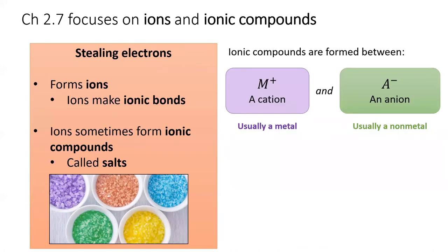Ionic compounds are always formed between a cation and an anion. Cations are usually metal, since metals tend to lose electrons. Anions are usually nonmetals, since nonmetals are greedy and try to steal electrons from other elements.